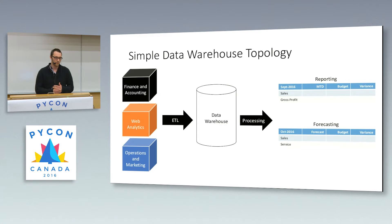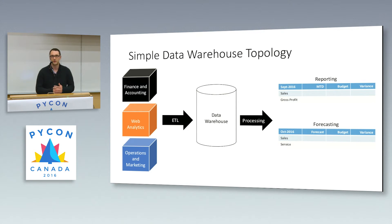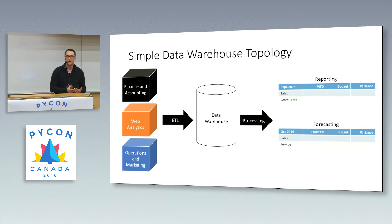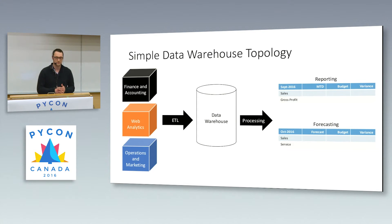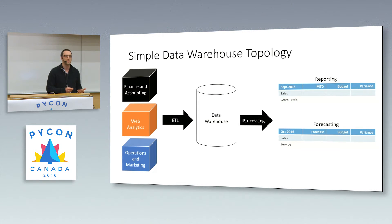For a quick overview of a data warehouse topology — for those that are unfamiliar — on the left side of the screen you'll see traditional business operation systems: finance and accounting, web analytics, sales and operations systems that all your business users are interacting with throughout their daily operations. The point of data warehousing is to bring all of that information into a centralized database, process that data, and then be able to report on it to show how your business is tracking against targets, forecast what direction you're going, and spot any issues early.